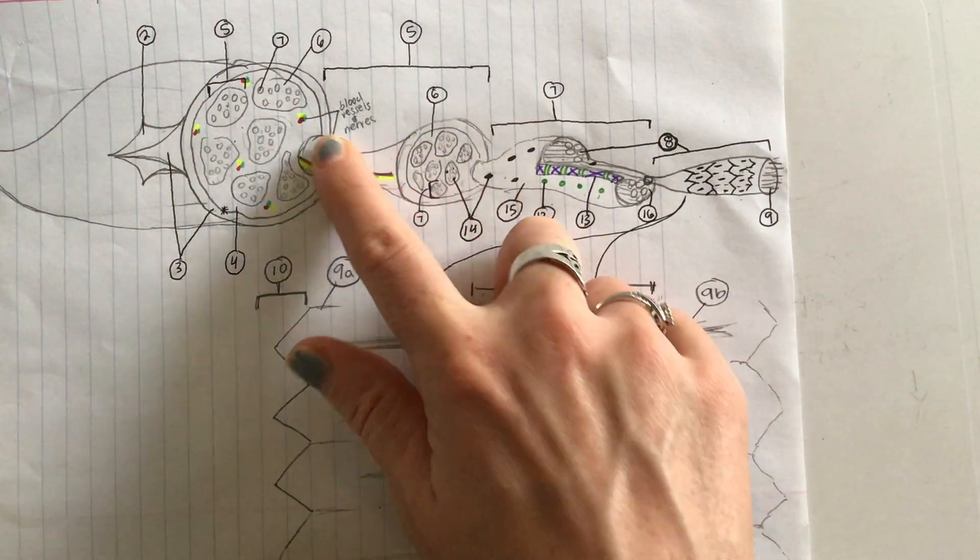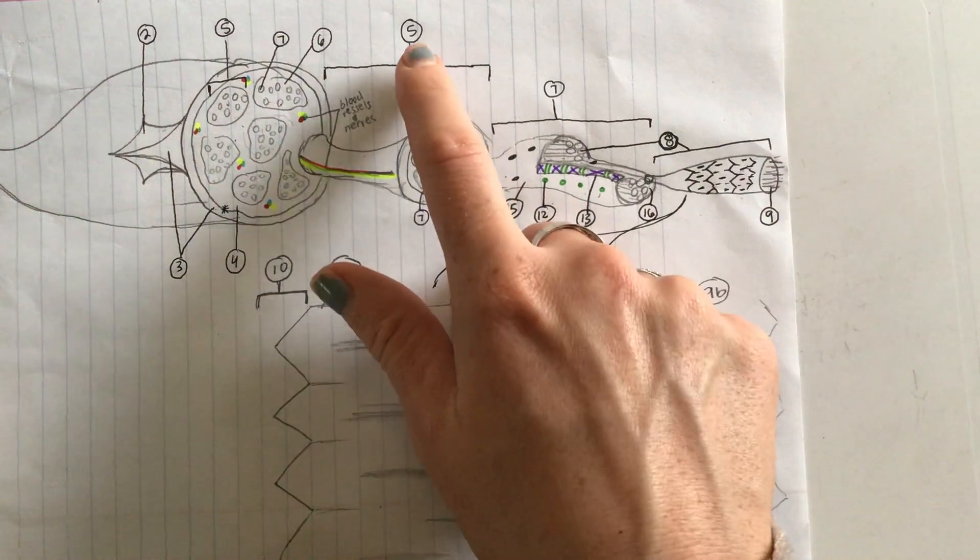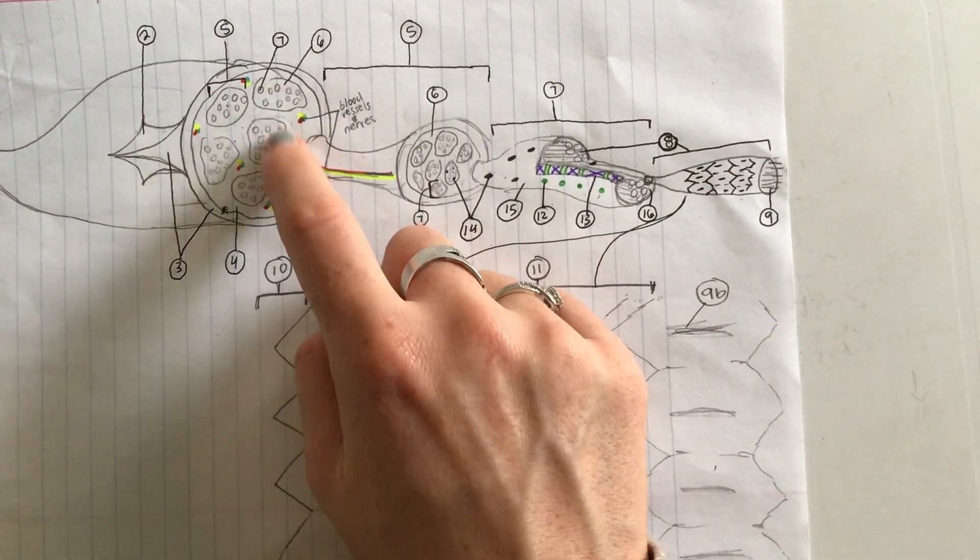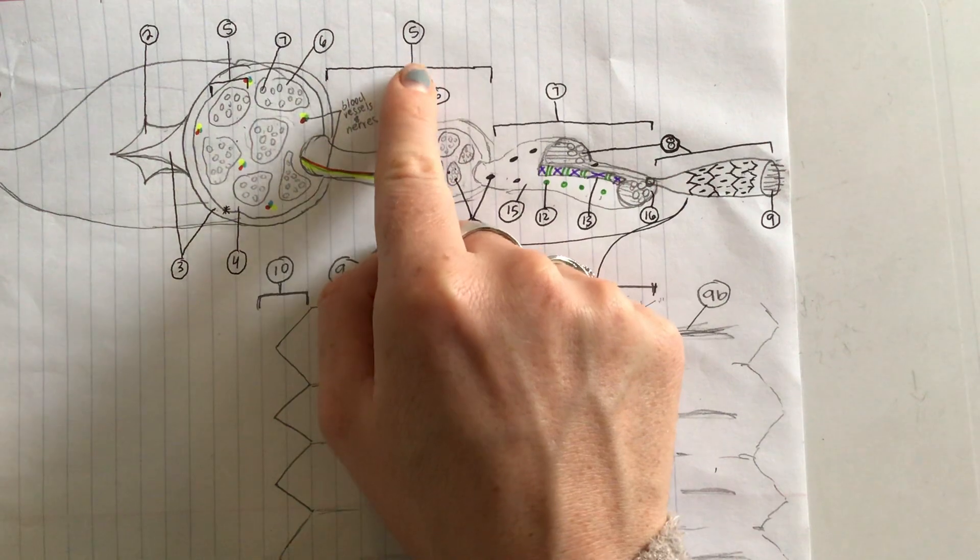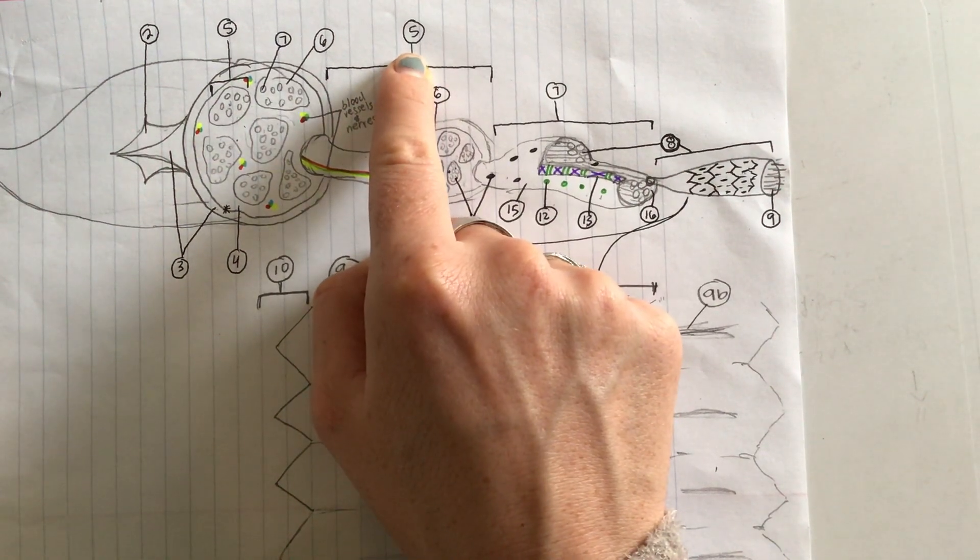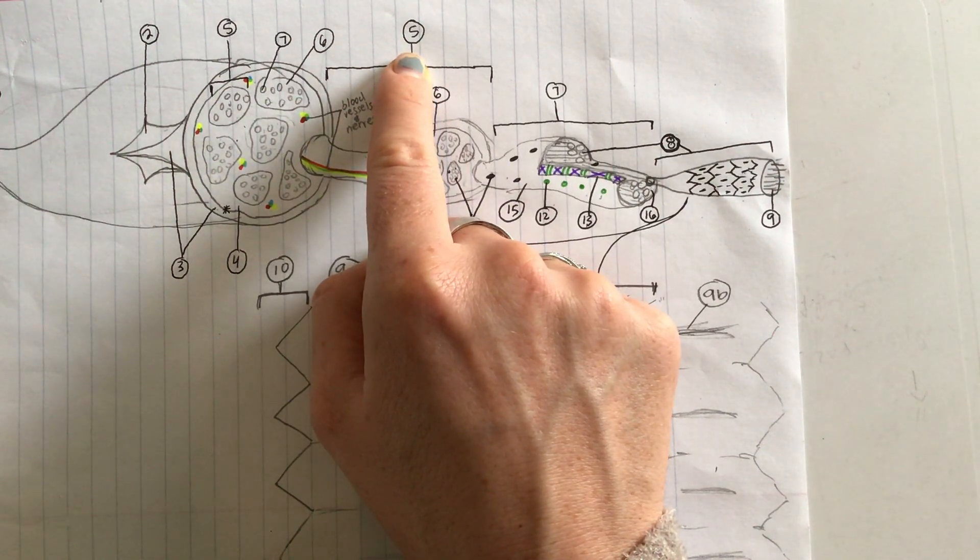This thing we just pulled out here, this entire structure, this is number 5. We see a bunch of them over here. They're bundles of muscle fibers. What is number 5? It is a fascicle.